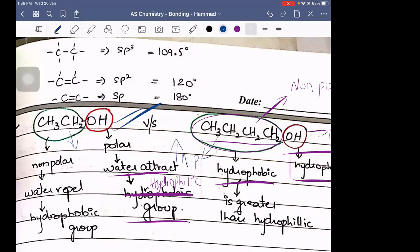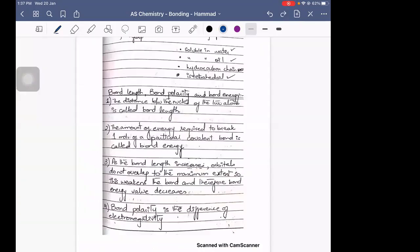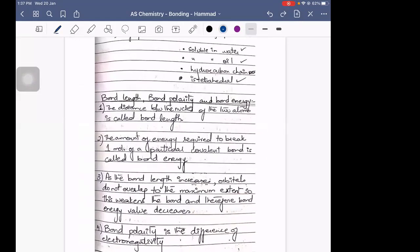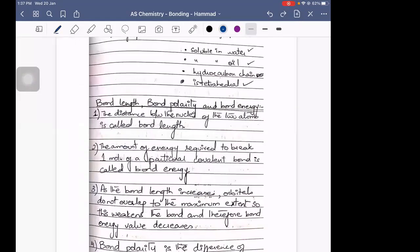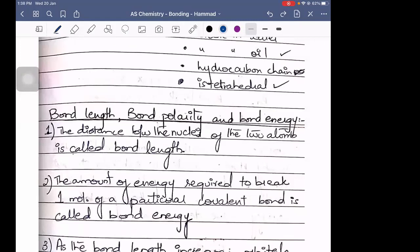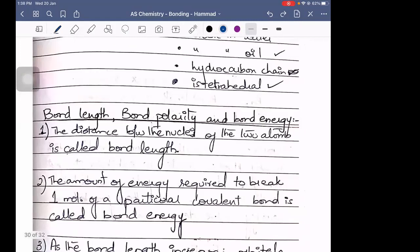The topic we have is bond length, bond polarity, and bond energy. Bond length is basically the distance between the nuclei of the two atoms. It is called the bond between two different nuclei.